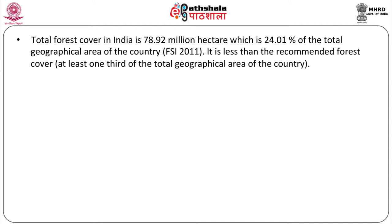The climax vegetation is represented by either forest or desert vegetation. Primarily, on the basis of temperature, Indian vegetation is characterized in four major zones. Alpine, where annual temperature is below 7 degrees centigrade. Second is temperate, where mean annual temperature lies between 7 to 17 degrees centigrade. The third is subtropical, where the mean annual temperature ranges from 17 to 24 degrees centigrade. And the fourth one is tropical, where the annual temperature is over 24 degrees centigrade.